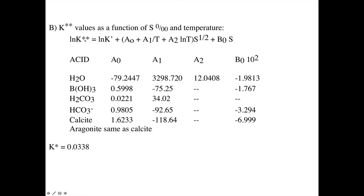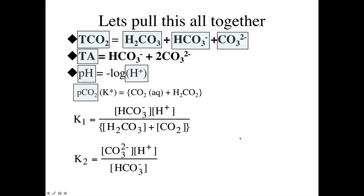For our purposes, K* can be assumed constant at 0.0338. In the Excel spreadsheet shown at the end of this presentation, there is also an algorithm for calculating K* as a function of salinity. Now that we have our equilibrium constants, we have six equations, eight unknowns, and values for K*, K1, and K2.